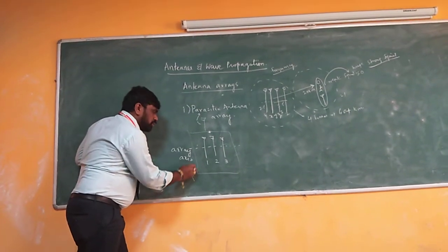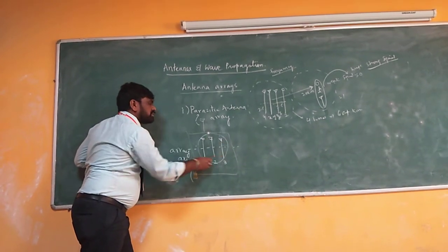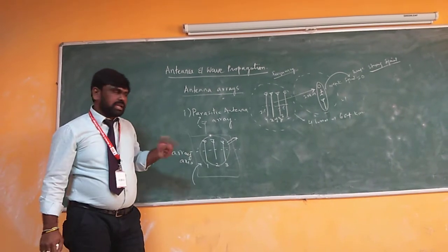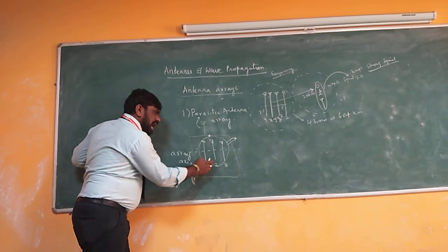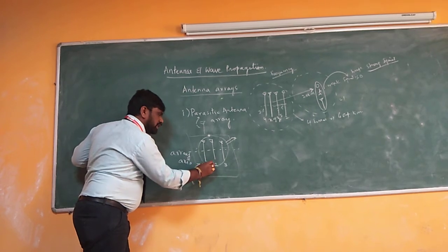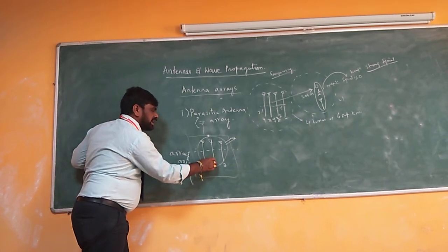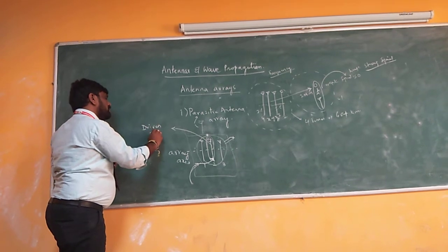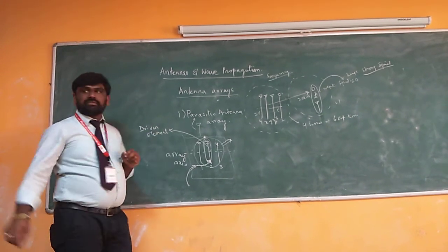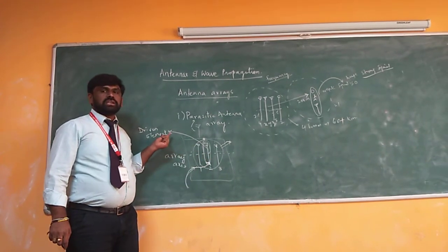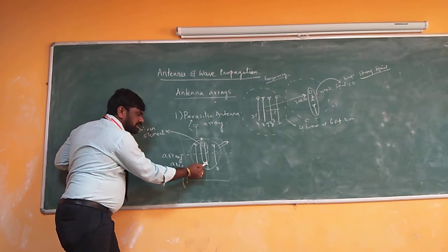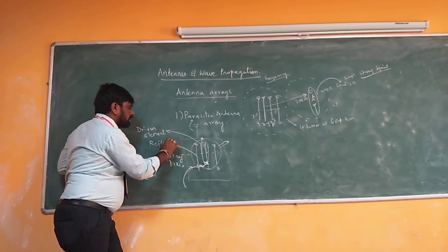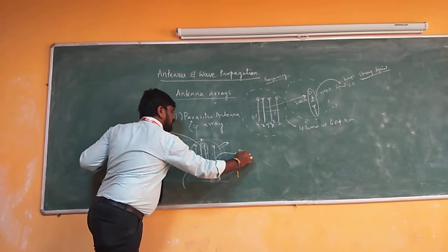I give input to one of the three antennas, and all three radiate electromagnetic waves into free space. The antenna that receives the input is called the driven element. Any antenna which takes input in a given antenna array is always called the driven element. All the antennas on the left side of the driven element are called reflectors, and the antennas on the other side are called directors.